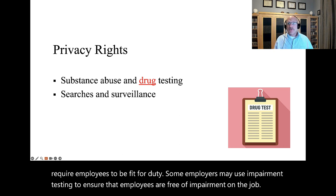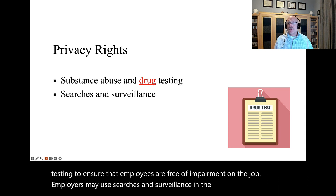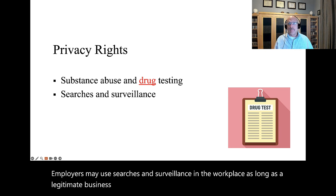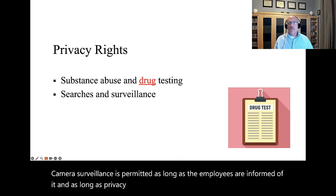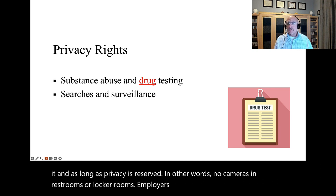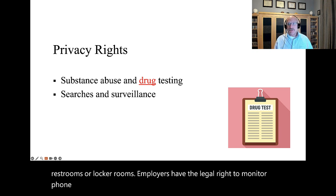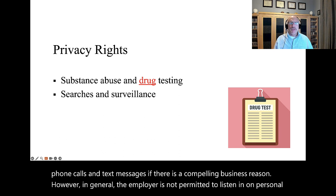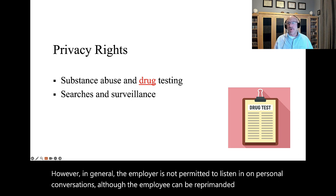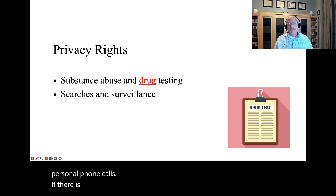Employers may use searches and surveillance in the workplace as long as a legitimate business reason exists to do so. Camera surveillance is permitted as long as the employees are informed of it and as long as privacy is preserved — in other words, no cameras in restrooms or locker rooms. Employers have the legal right to monitor phone calls and text messages if there is a compelling business reason. However, in general, the employer is not permitted to listen in on personal conversations, although the employee can be reprimanded for making personal phone calls if there is a policy in place that prohibits them.